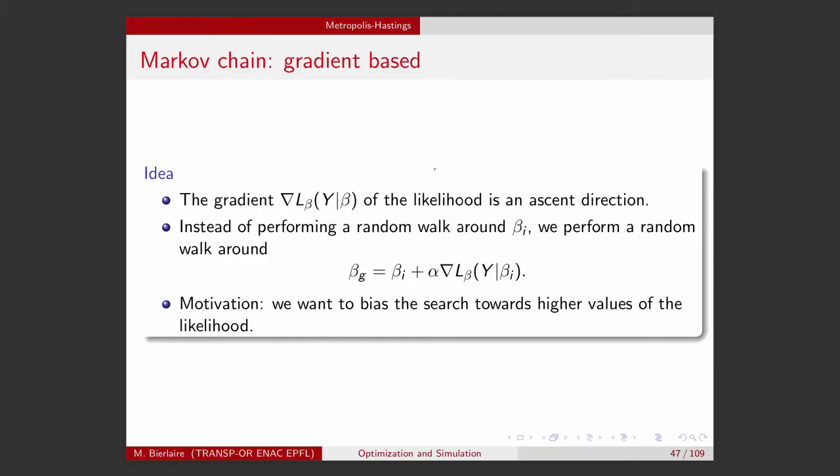So this was an illustration of the algorithm where the transition probability was symmetric. Remember, Q_ij was equal to Q_ji, and therefore, in the acceptance probability, they canceled out.